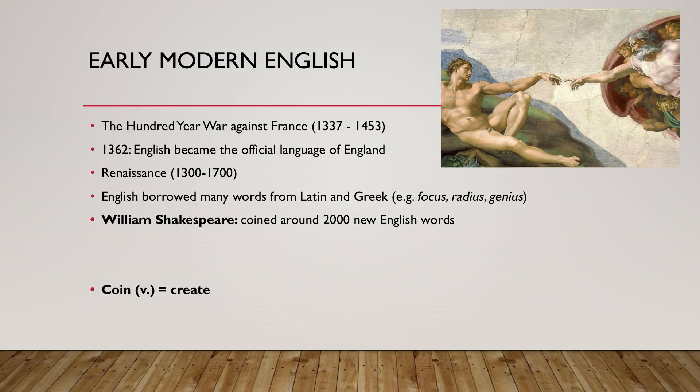The Hundred Years' War against France had an effect on the status of the French language in England, and the status of English began to rise as a result. In 1362, English was made the official language of England. During this period, words from Latin and Greek were borrowed into the English language — for example, focus, radius, and genius — and a large number of prefixes and suffixes were borrowed as well.